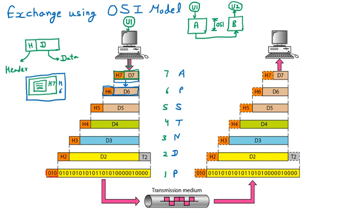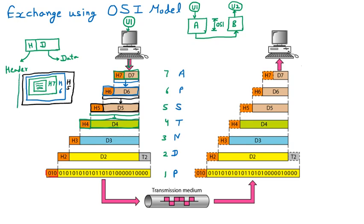This complete data moves to the next layer, becoming D5. The session layer adds header H5 — another envelope is applied. This is the logical example using envelopes to show how each layer wraps the data. The whole becomes the new data and is transferred to the next layer, becoming D5.